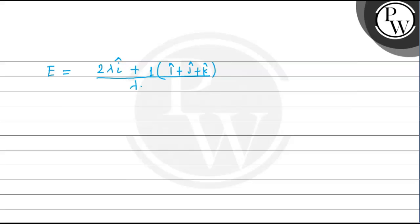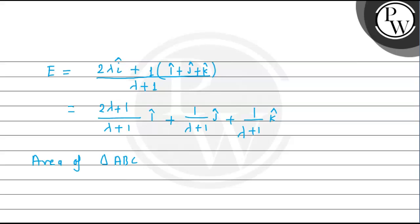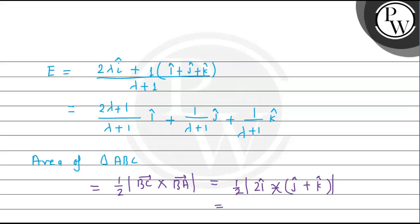The position vector of E, using the section formula, is: (2λ+1)/(λ+1) î + 1/(λ+1) ĵ + 1/(λ+1) k̂. Now let's calculate the area of triangle ABC. Area of ABC equals half times |BC⃗ × BA⃗|. My BC vector gives 2î, and we compute the cross product with ĵ + k̂.